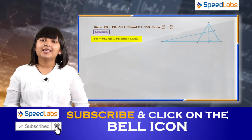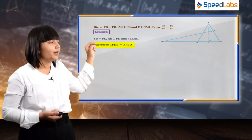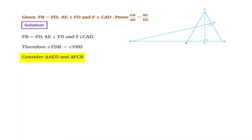So we can say that angle FBD is equal to angle FDB. In order to prove what is given in the question, we need to see the triangles AED and triangle FCB.